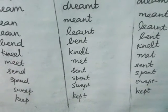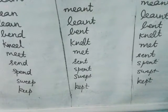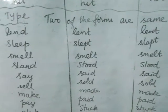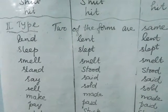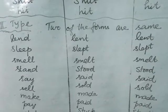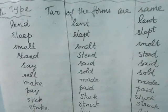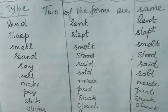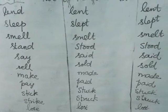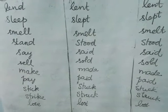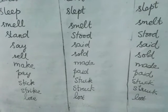Continuing Type 2 verbs where two forms are the same: sweep, swept, swept; keep, kept, kept; lend, lent, lent; sleep, slept, slept; smell, smelt, smelt; stand, stood, stood; say, said, said; sell, sold, sold; make, made, made; pay, paid, paid; stick, stuck, stuck.